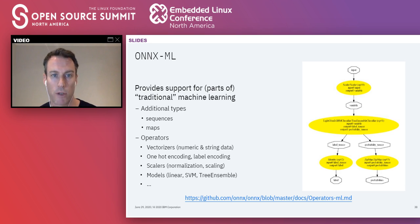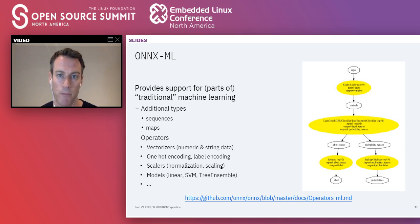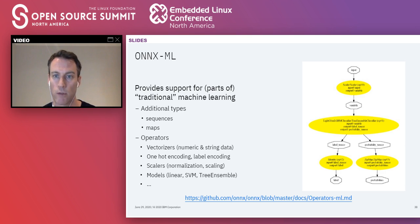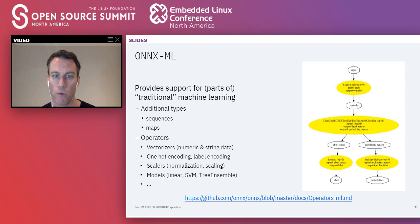Even deep learning models need some preprocessing, and traditional ML pipelines involve a lot of feature engineering. To address this, a part of the spec called ONNX-ML was created, providing support for traditional machine learning. It adds two additional types — sequences and, most importantly, maps — allowing mappings from strings to integers or integers to strings, useful for categorical feature encoding, one-hot encoding, and similar tasks. ONNX-ML adds specific operators for traditional ML: vectorizers for numeric and string data, one-hot encoding and label encoding for categorical features, scaling and normalization of numerical feature vectors, and standard models including linear models, support vector machines, trees, and ensembles of trees.